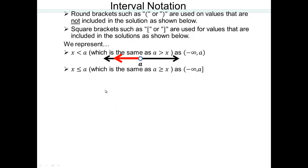Now let's try the next one: x is less than or equal to a. It should be the same as before, with the only difference being that now you are allowing x to equal a. So the only difference is that you are including a. The negative infinity part will stay the same, but a is going to have a square bracket. Square bracket at a means a is included, so it will look the same as above except a is filled in.